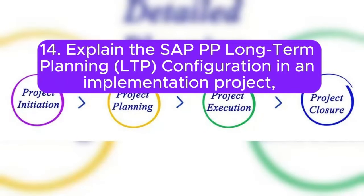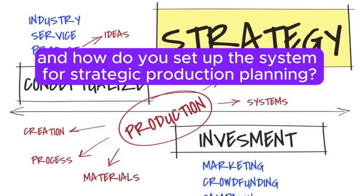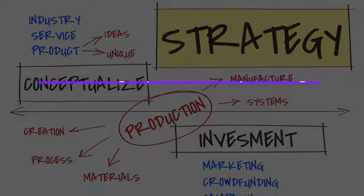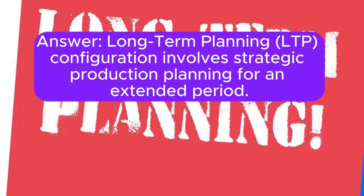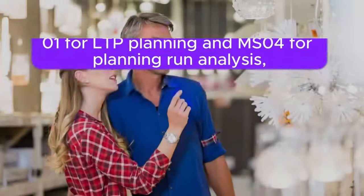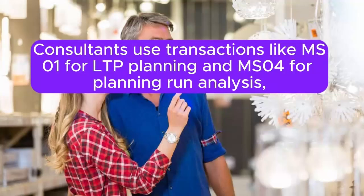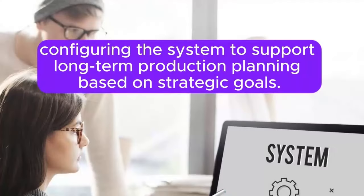Question 14: Explain the SAP PP long-term planning (LTP) configuration in an implementation project. How do you set up the system for strategic production planning? Long-term planning (LTP) configuration involves strategic production planning for an extended period. Consultants use transactions like MS01 for LTP planning and MS04 for planning run analysis, configuring the system to support long-term production planning based on strategic goals.